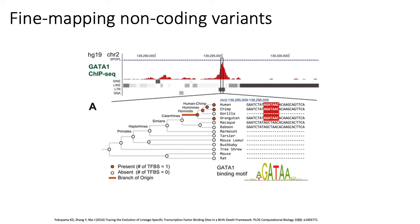Unfortunately, the vast majority of GWAS variants — somewhere between 90 and 92% of all variants identified as being associated with traits — tend to sit in non-coding regions of the genome, away from protein coding variants. That's a huge problem because the non-coding region of the genome is much more difficult to characterize and much more poorly understood in general than the coding regions.